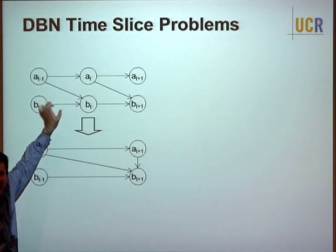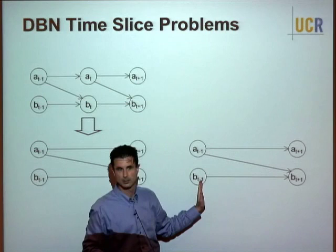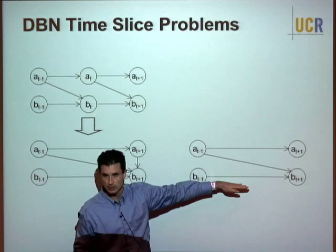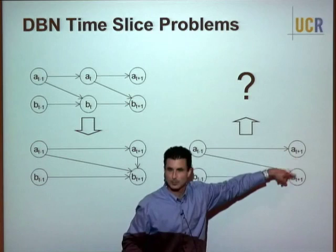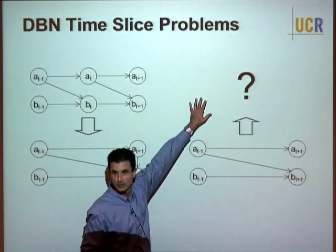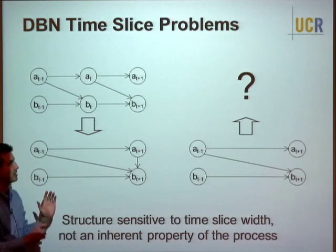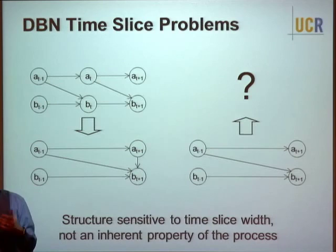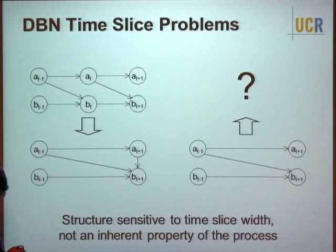This means the DBN structure is not just a function of the underlying process — it's a function of the underlying process and a particular sampling rate. If I have a structure at half the sampling rate and ask what structure could be marginalized to produce it, the answer is there is none. The independence assumption is hidden inside probability distributions and is not representable in the graphical model framework.